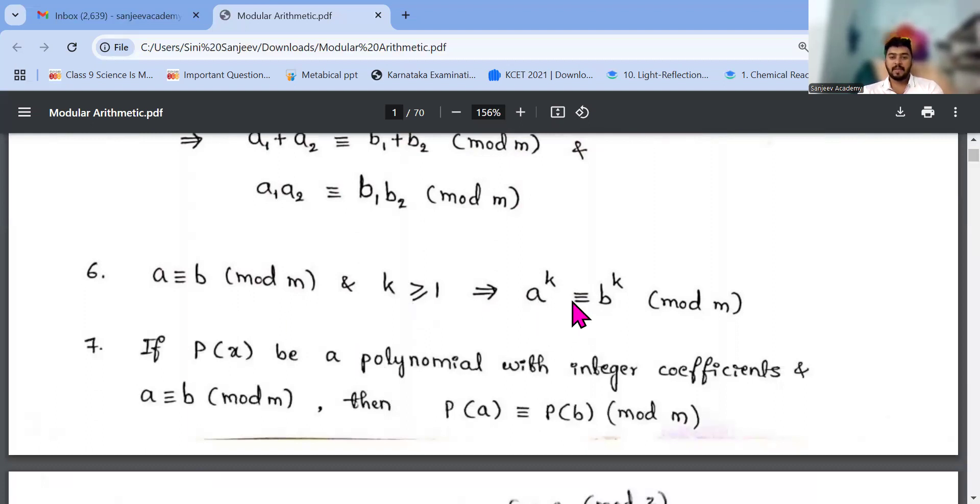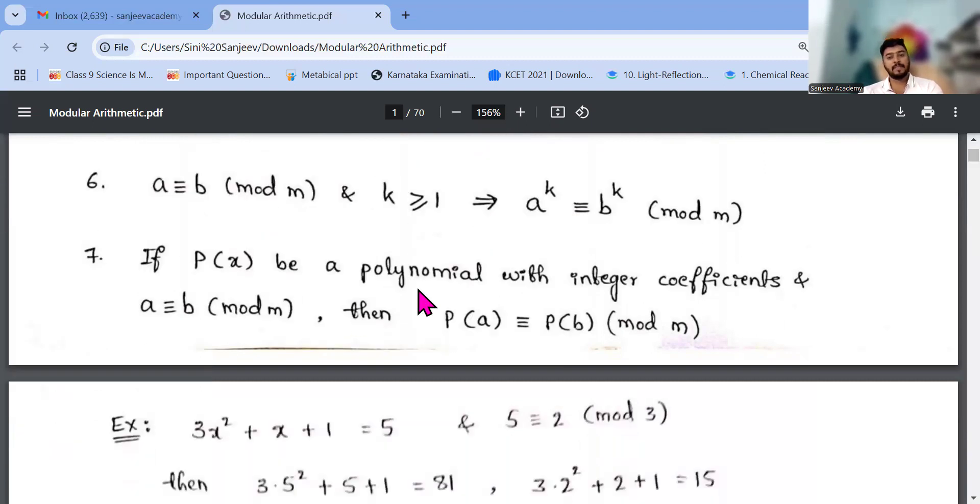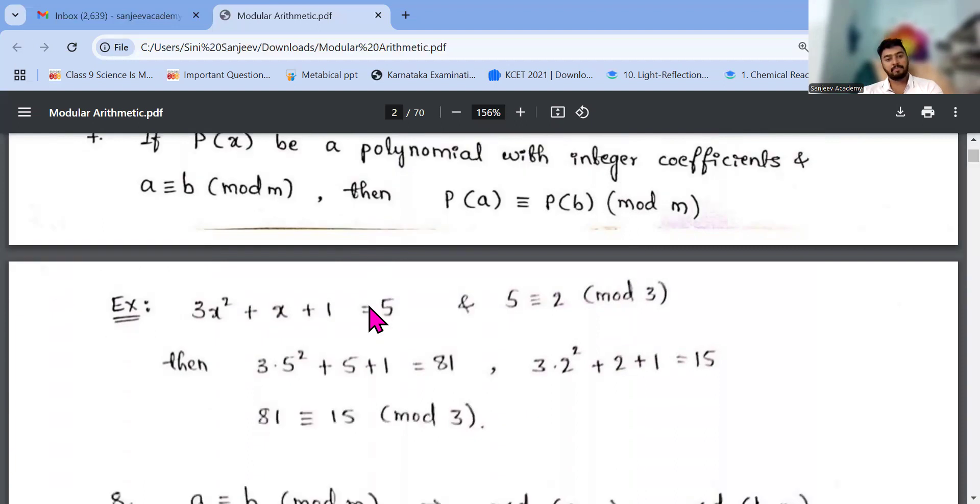Sixth one, a power k equals b power k mod m. Then p of x is a polynomial with integer coefficients and a congruent to b mod m, then p of a congruent to p of b mod m. So let's see an example of that. 3x squared plus x plus 1 equals 5, and 5 congruent to 2 mod 3. So what I will do, instead of this x I will put the 5, 5 squared, and also I will put 2. So 81 I will be getting, second one I will be getting 15. 81 congruent to 15 mod 3, that's it.